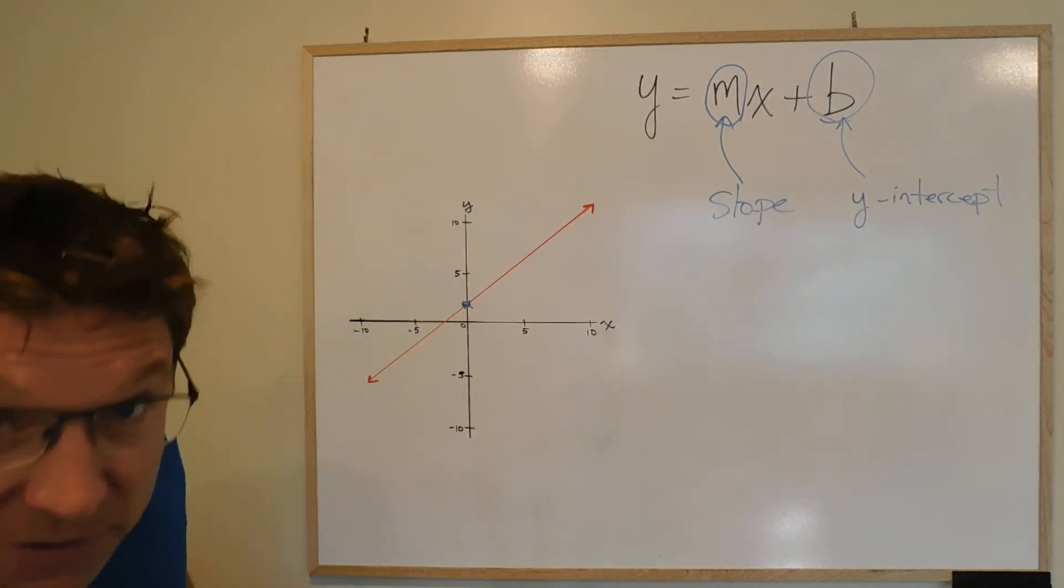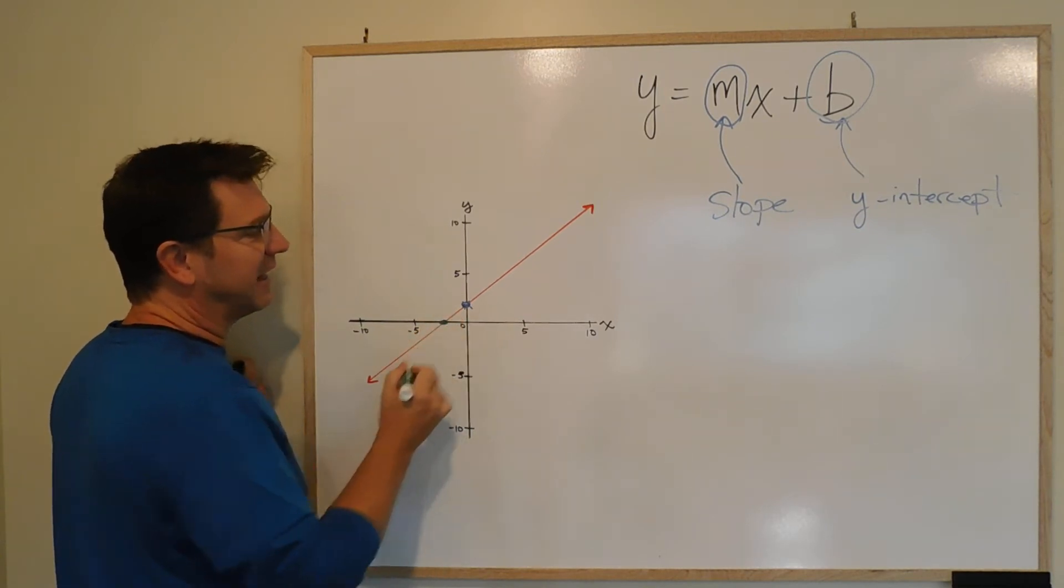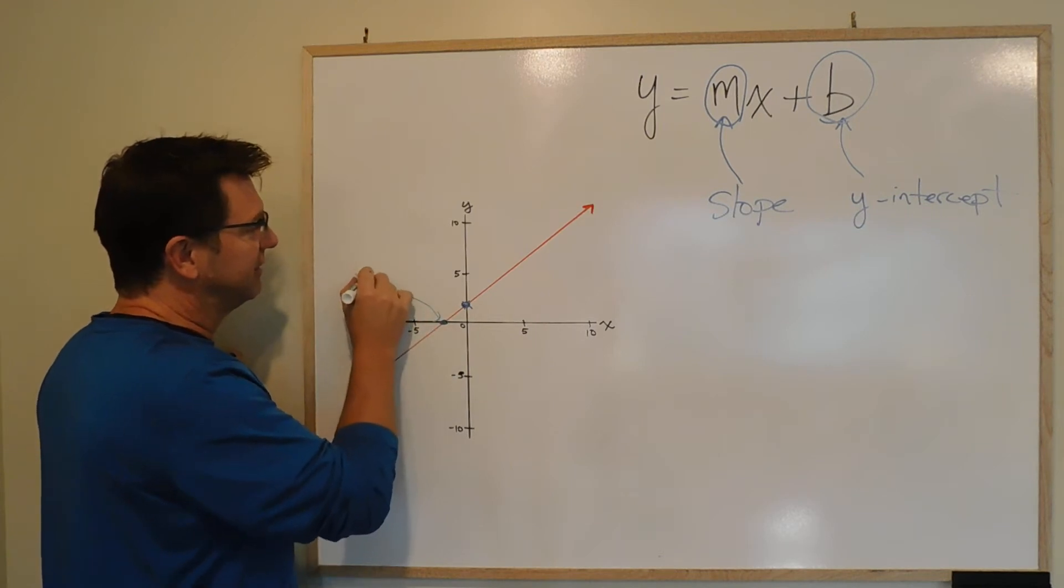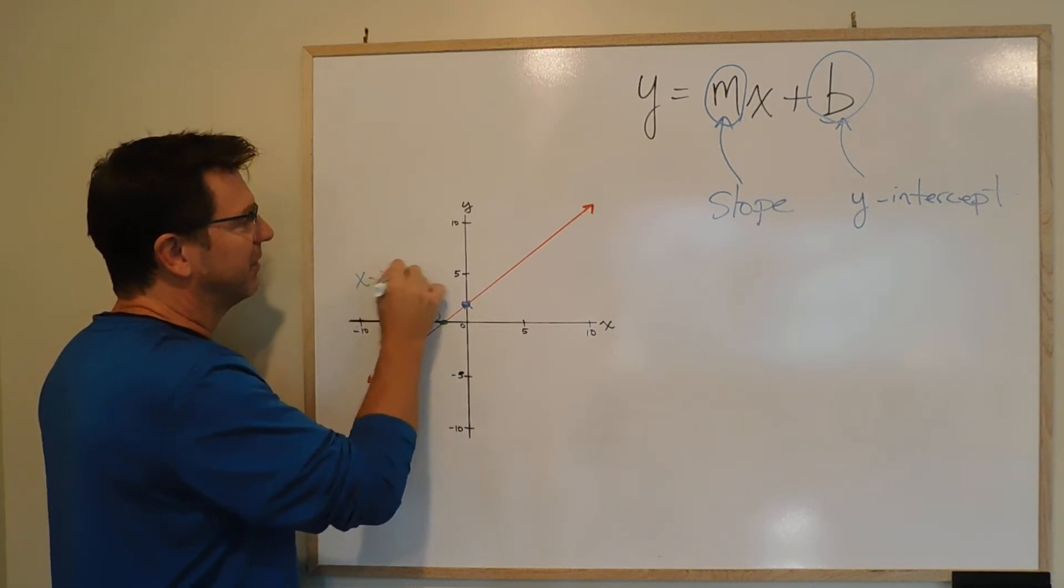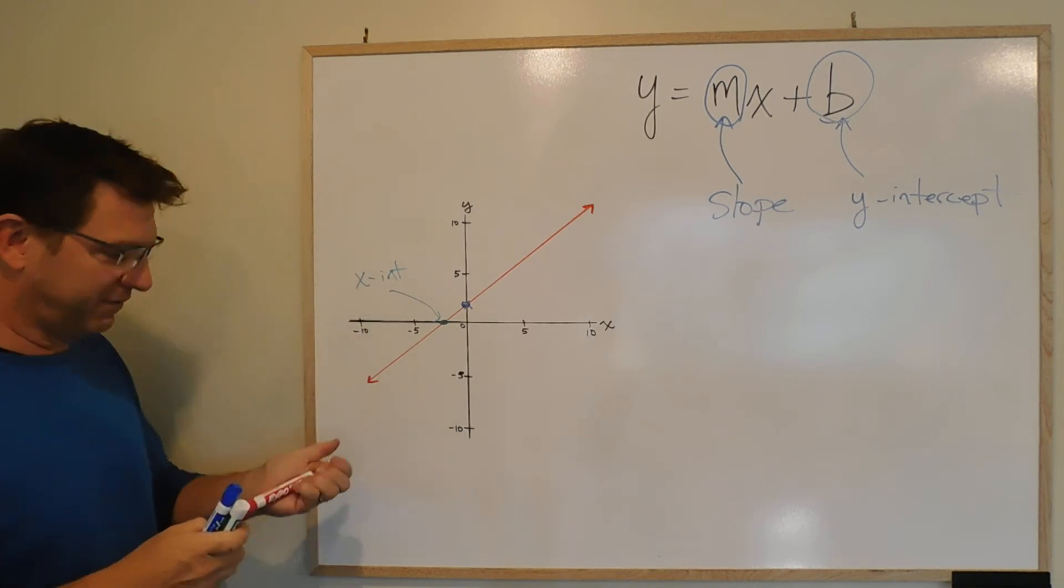If we change color, we'll use some green. The x-intercept is where the graph crosses the x-axis. So this here is the x-intercept, and you'll often see it written as x-int, short for x-intercept.